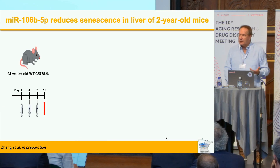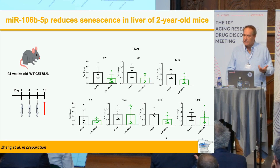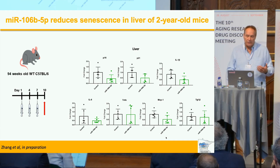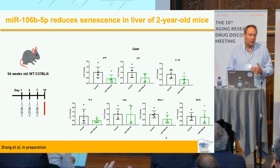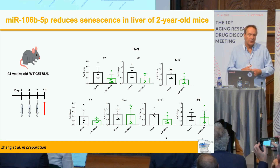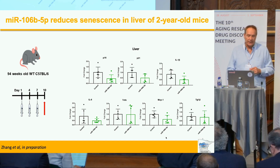We've gone on to show that if you take this single microRNA and inject it into two-year-old mice, we see markers of senescence going down — not all markers, but in vivo, p16 and p21 are reduced. We don't know if reducing p21 reflects effects on peripheral senescence or if it's actually targeting p16-positive cells in addition, at least in liver. But this shows a single microRNA can have senolytic activity.